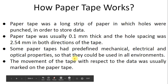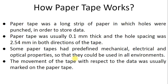How paper tape works: paper tape was a long strip of paper in which holes were punched in order to store data. The data you want to store goes on the entire long paper strip - it is a roll. The whole roll with 8 holes or 5 holes - on the strip, you store data by filling holes. Paper tape was usually 0.1 mm thick.